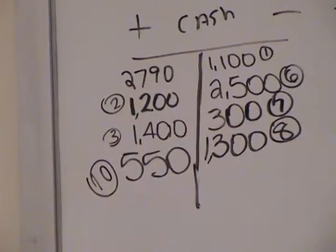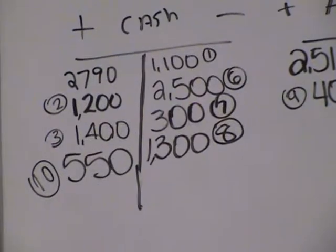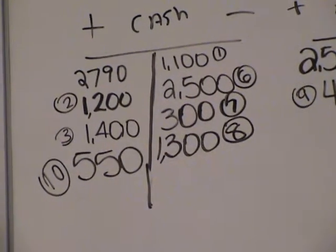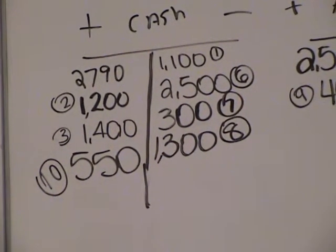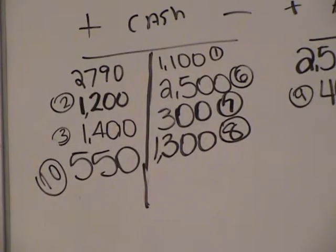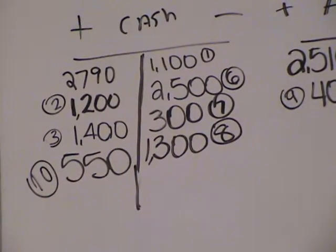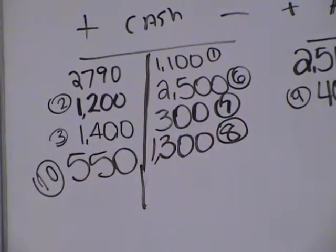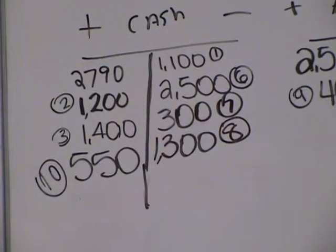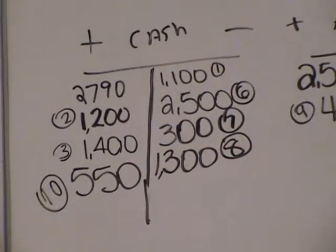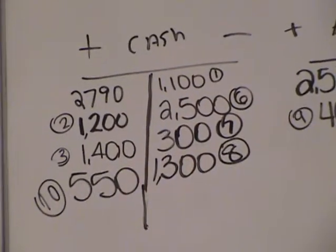So now what she's going to do, now what she's going to do, she's going to add all the pluses, true Michelle? Yep. Like in the cash account, 2790 plus 12 plus 14 plus 550. Then she's going to minus the right side and she's going to box it with brackets on the bottom on the natural side, and we'll be right back and she's going to make a trial balance.